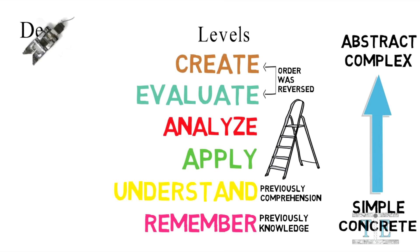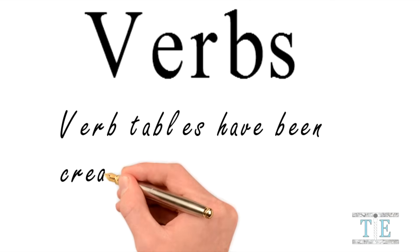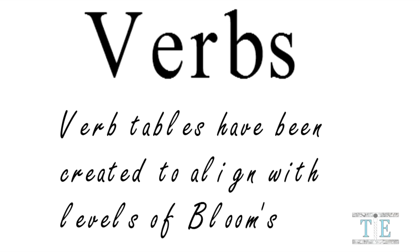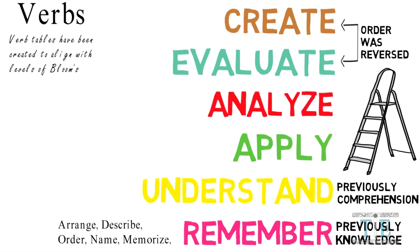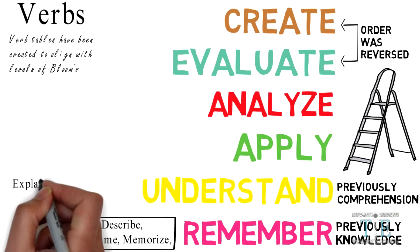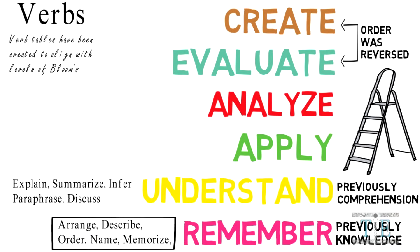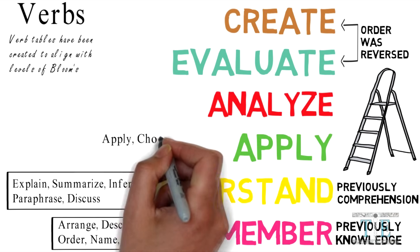When utilizing Bloom's Taxonomy as educators, descriptive verbs have been made available to help educators plan lessons. Verb tables have been created to align with levels of Bloom's. Arrange, describe, order, name, memorize, summarize — those particular verbs are used to set objectives for the remember level. Explain, summarize, paraphrase, infer, discuss are all aligned with understanding.